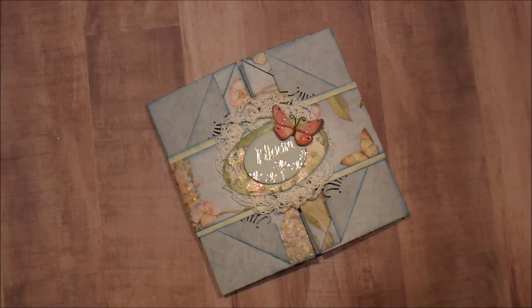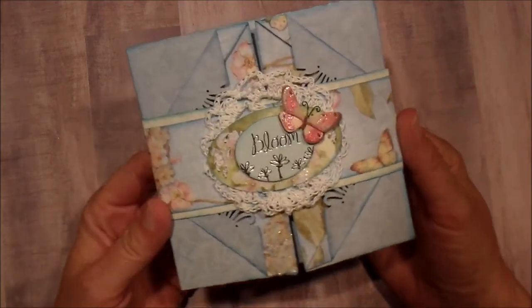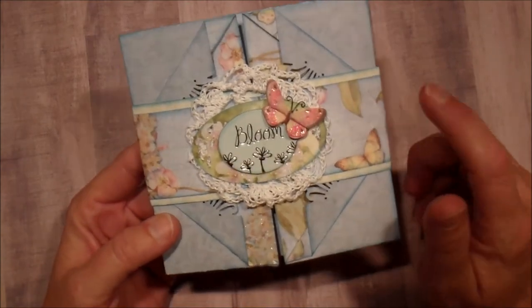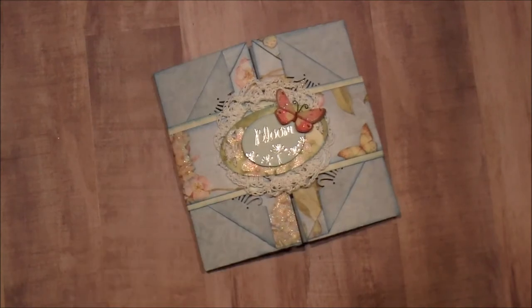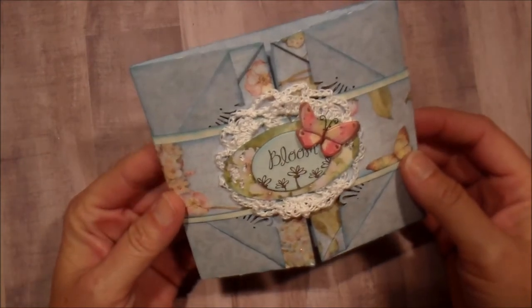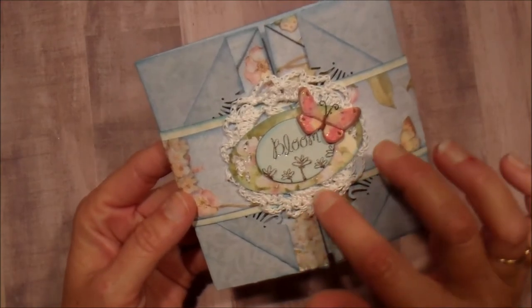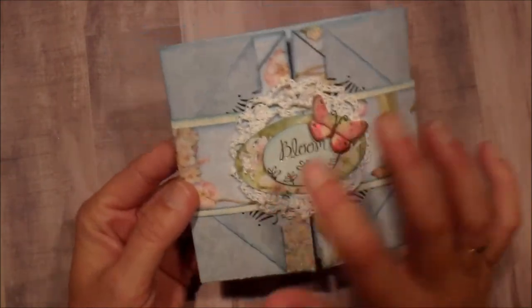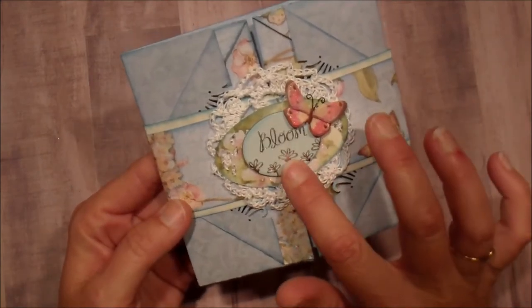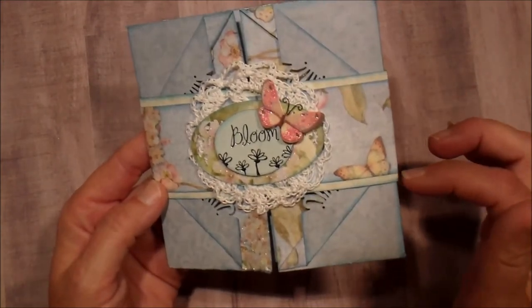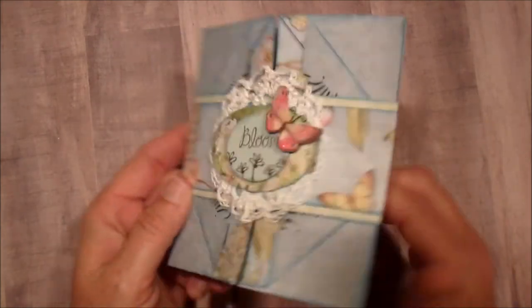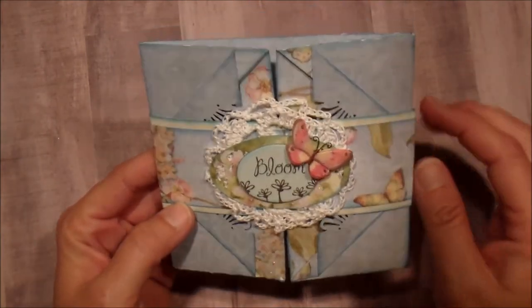This is my creation for week one. This paper is made out of K and Company, I think it's the Susan Wing collection. I used a doily that I crocheted, it's not very good but it worked for the card. I used just some basic butterfly stickers and some cardstock, just something I got from Hobby Lobby or Michael's, it's just a light beige cardstock.